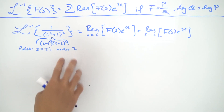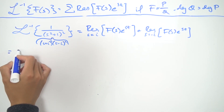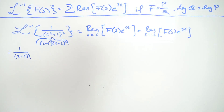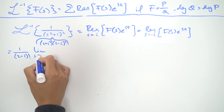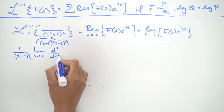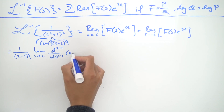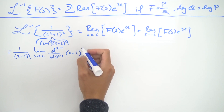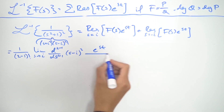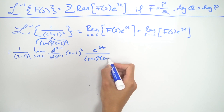These are order-two poles, so we apply the formula for residues at higher-order poles. That gives us 1 over (2−1)! times the limit as s approaches i of the first derivative with respect to s of (s − i)² times e^(st) divided by (s + i)²(s − i)². Then we add the same structure for the pole at s = −i: 1 over (2−1)! times the limit as s approaches −i of the first derivative of (s + i)² times e^(st) divided by (s + i)²(s − i)².